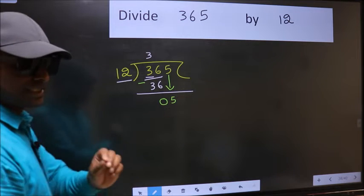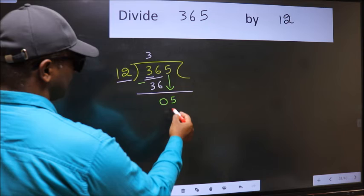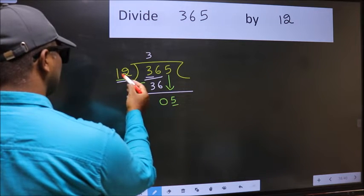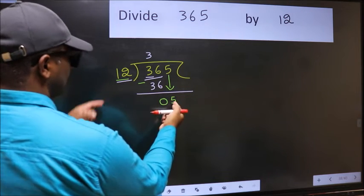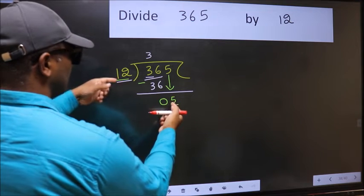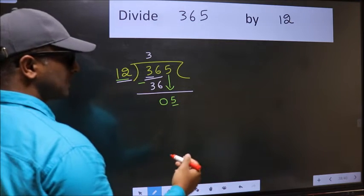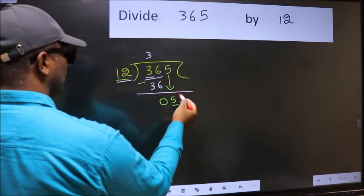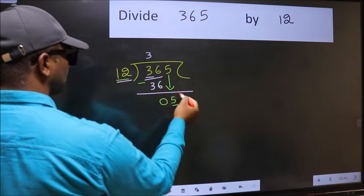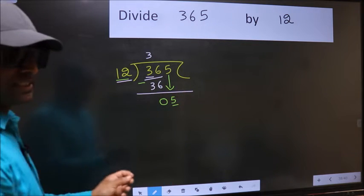And the mistake is this. Here we have 5 and here 12. 5 is smaller than 12. So what many do is they directly put dot and take 0, which is wrong.